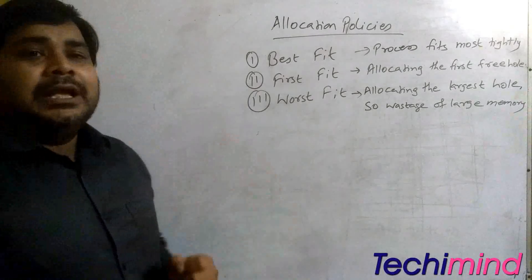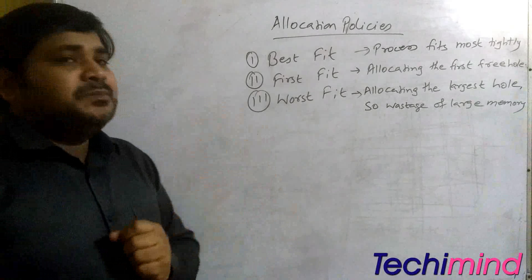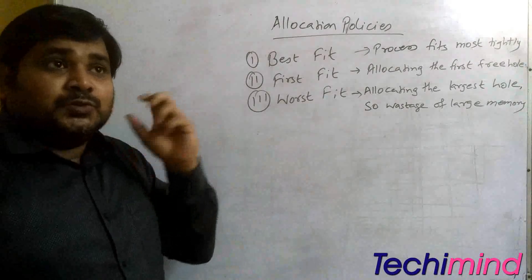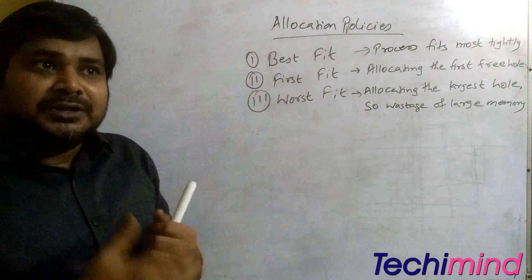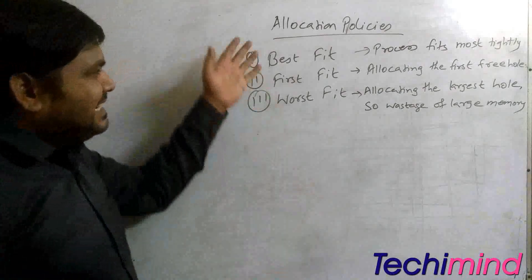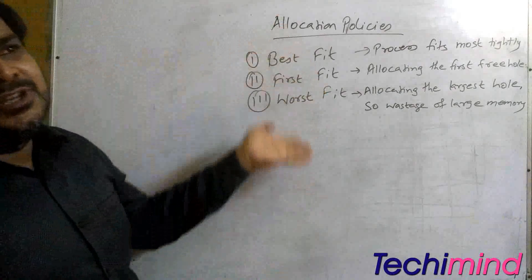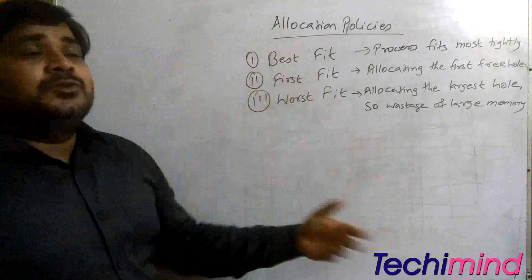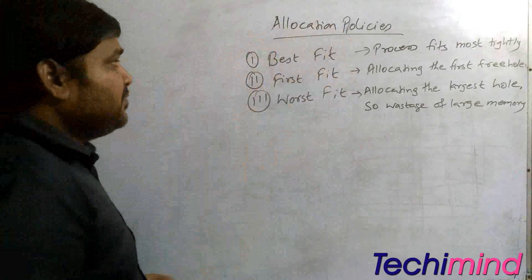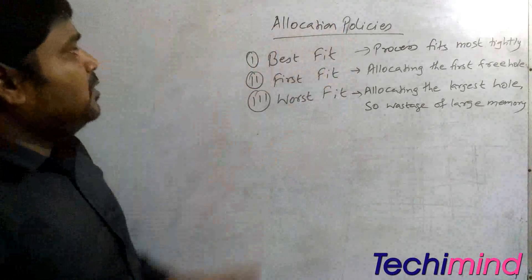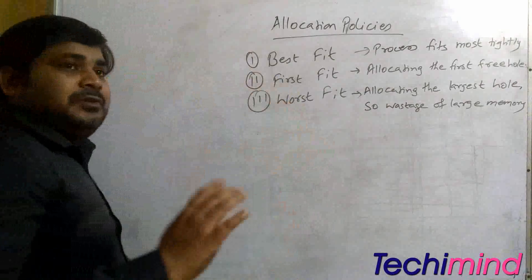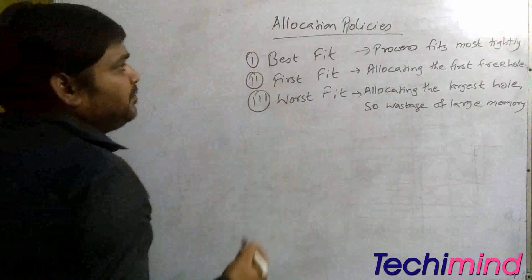In this video we are going to learn about allocation policies — how a process is allocated to main memory. What are the policies and what is the methodology to allocate a process to a free partition or a hole? We have basically three types of allocation policies, used in fixed partition and also in paging and segmentation systems. The three allocation policies are: best fit policy, first fit policy, and worst fit policy.